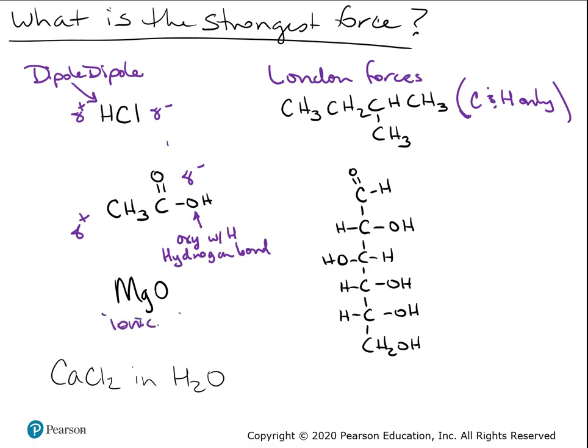What about MgO? MgO is ionic, right? Because you see a metal and a nonmetal. Magnesium is to the left of the zigzag line, oxygen to the right.